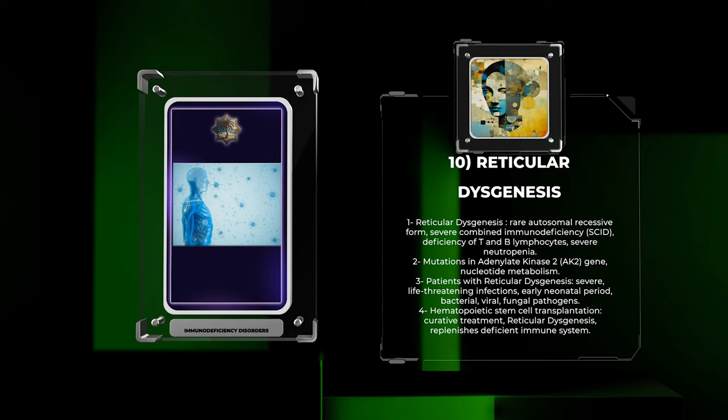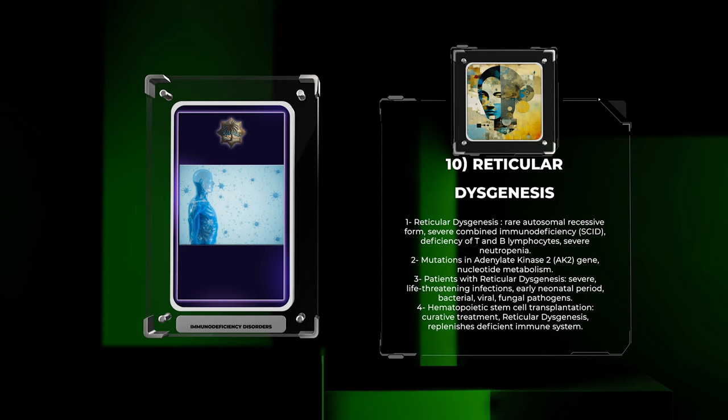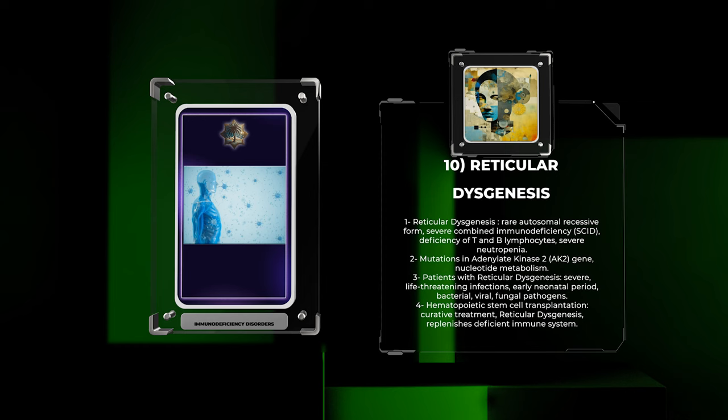Reticular dysgenesis is a rare autosomal recessive form of severe combined immunodeficiency (SCID), characterized by a profound deficiency of both T and B lymphocytes and severe neutropenia. Mutations in the adenylate kinase 2 (AK2) gene, vital for nucleotide metabolism, underlie this condition.